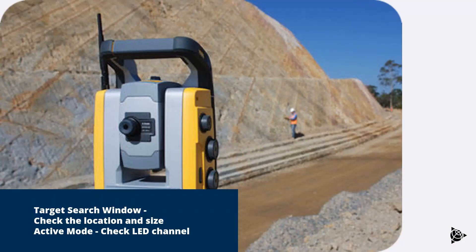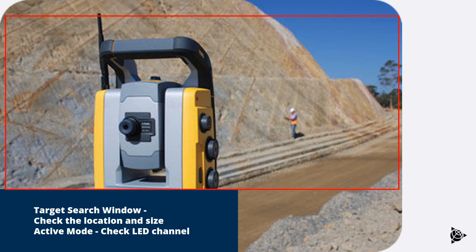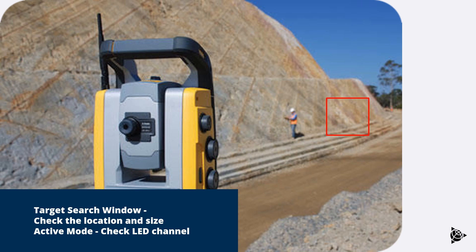If your total station is having problems tracking you altogether, it could be a problem with the defined target search window. Make sure the window is not too large, in which case it takes a long time to search through the whole pattern to find your prism. On the other hand, make sure it's not too small so that you're not within the window. Ideally, define the upper and lower extents of your window so that you're fully enclosed within it and it won't take long to find the prism.